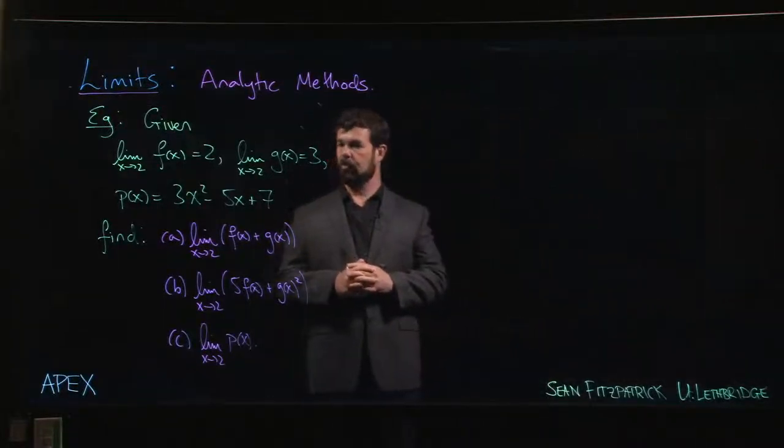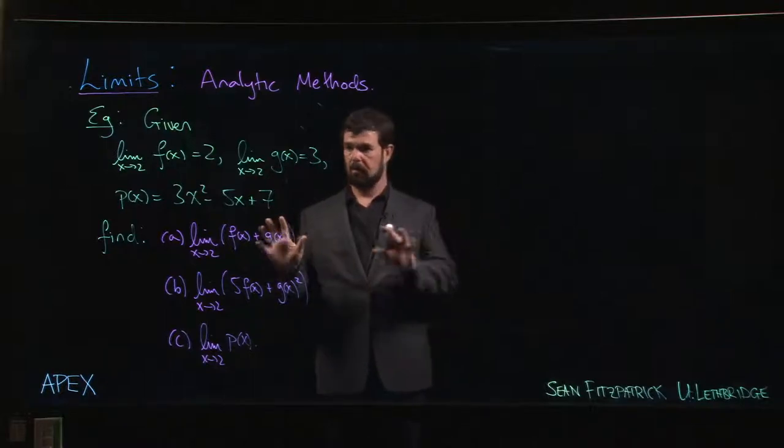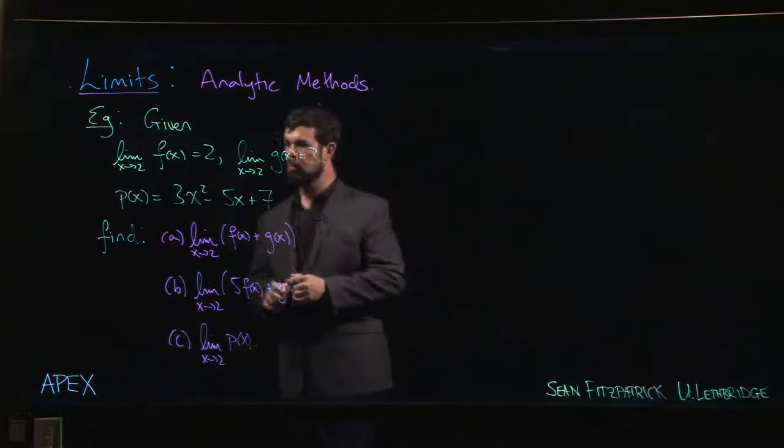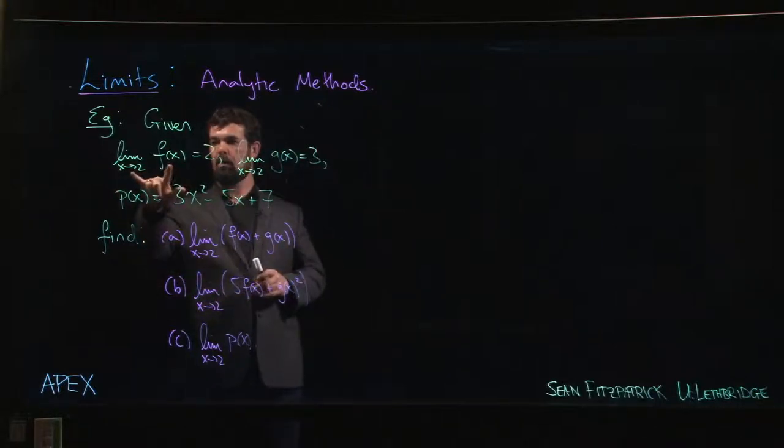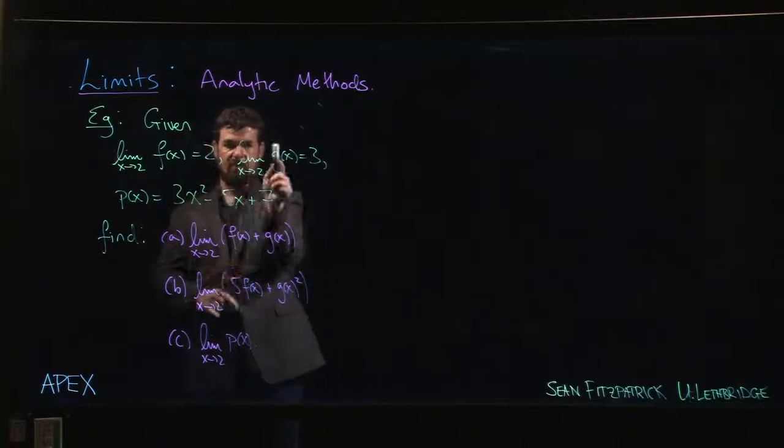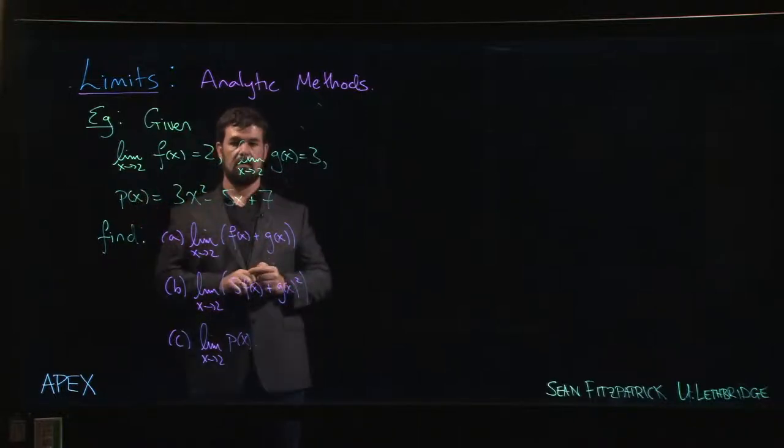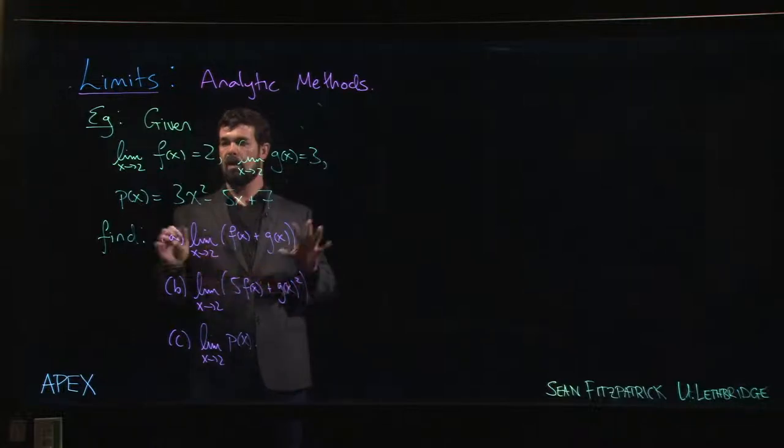Let's look at some basic examples where we apply the limit properties that we wrote down in the last video to some basic limit calculations. In this case, we're given the limit values for two different functions f and g at x equals 2. It's important here that the limit is at the same point for both functions.